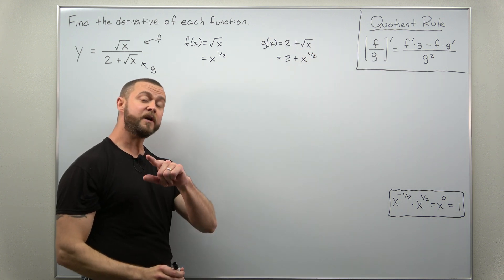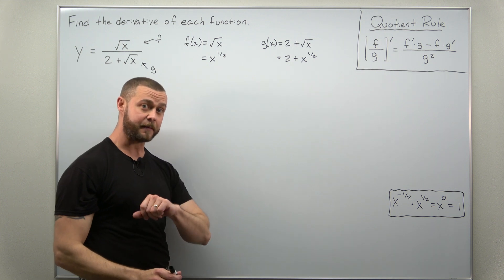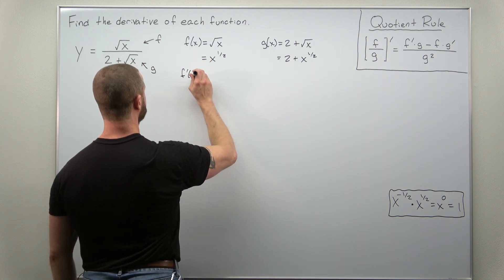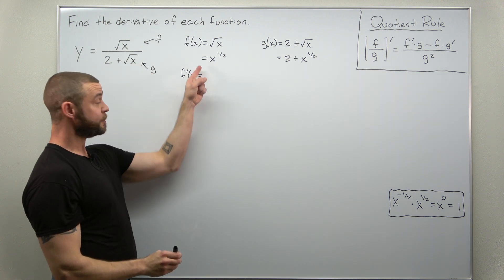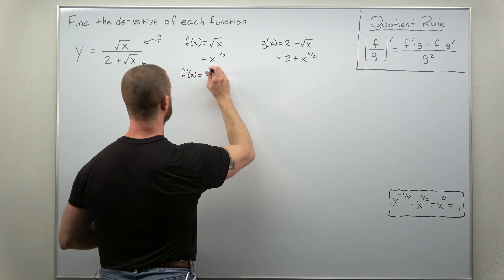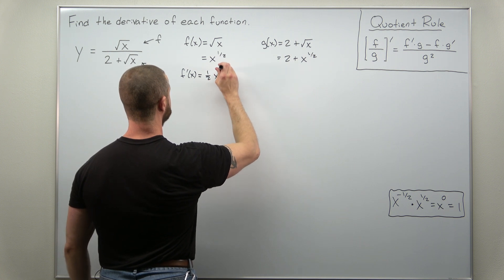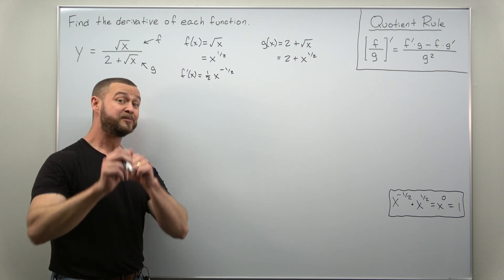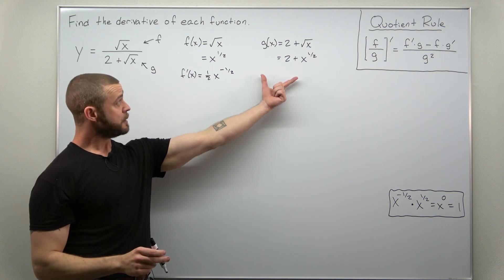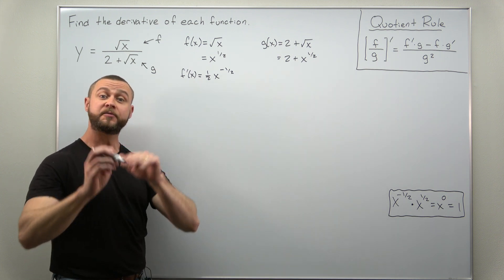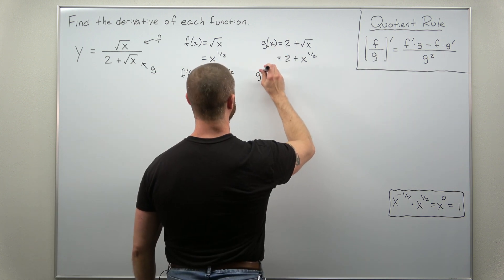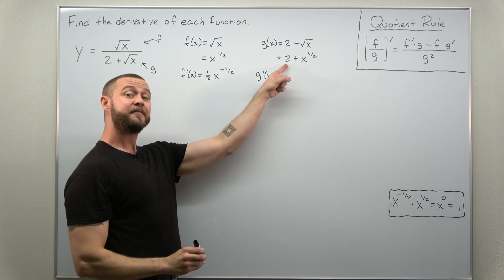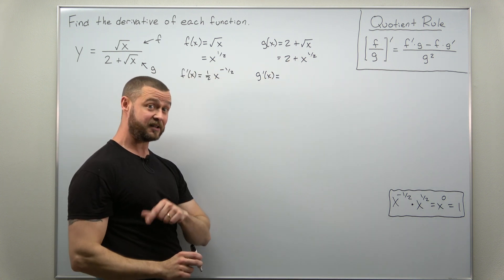We're going to calculate the derivatives f prime and g prime using the power rule now. Go ahead and start by bringing your power one-half down and then subtract one from the exponent. One-half minus one comes out to negative one-half. When we calculate g prime, it's pretty much the same thing.